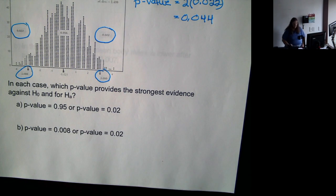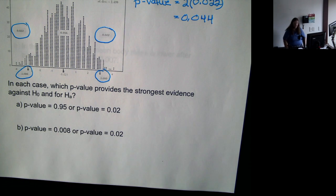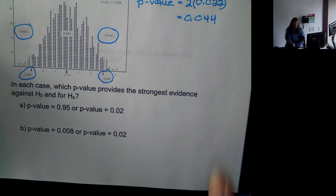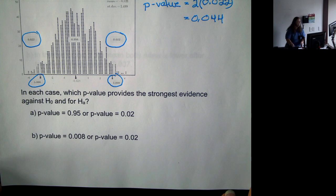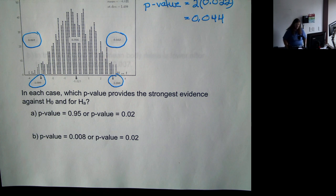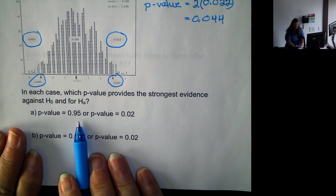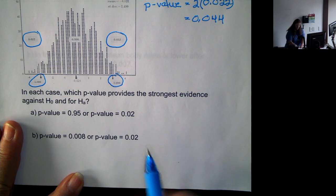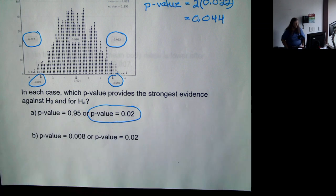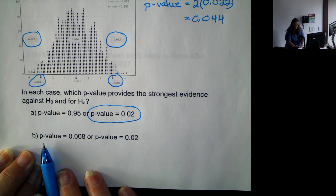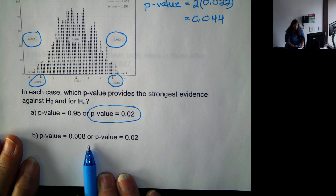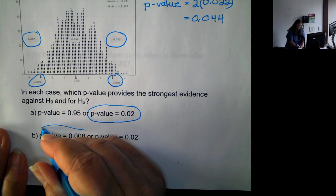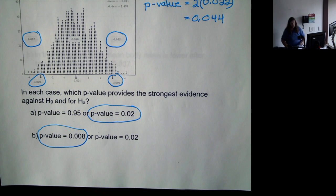Now we're just seeing which p-value shows the strongest evidence. The strongest evidence is the smaller p-value, because that's saying the probability of that result occurring by chance is very slim. For the first comparison: a p-value of 0.95 or 0.02 — 0.02 is less than 0.95, so that p-value shows stronger evidence against H0 and in favor of HA. For the second: a p-value of 0.008 or 0.02 — 0.008 is the smaller of the two, so that is showing stronger evidence.